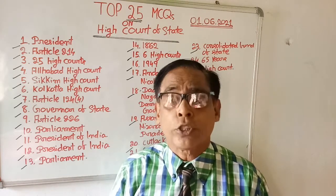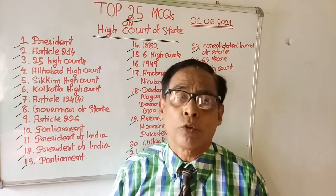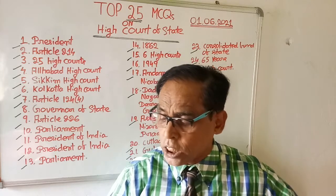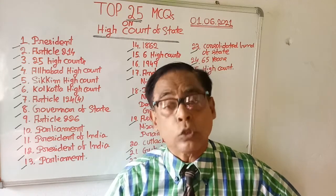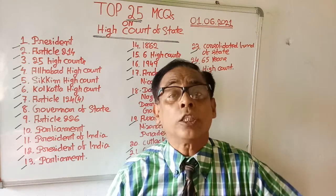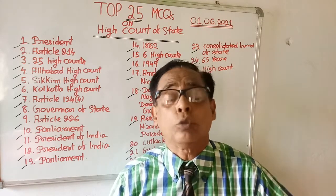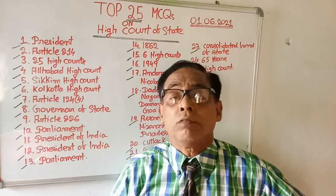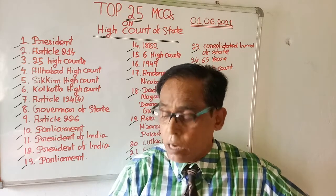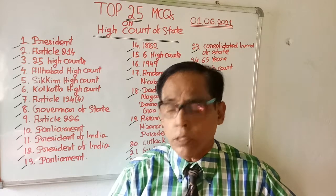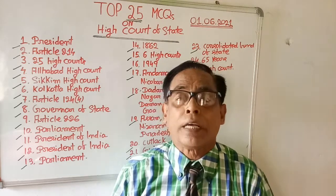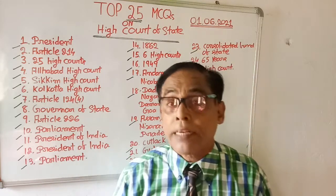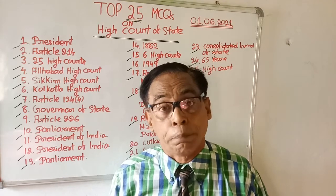Question number eleven: judges of the High Court tender their resignation to whom? Who is the authority that receives the resignation from a judge of the High Court? Options are: Governor of the state, Prime Minister, Parliament, and President of India. The right answer is President of India — judges can give their resignation letter to the President of India.